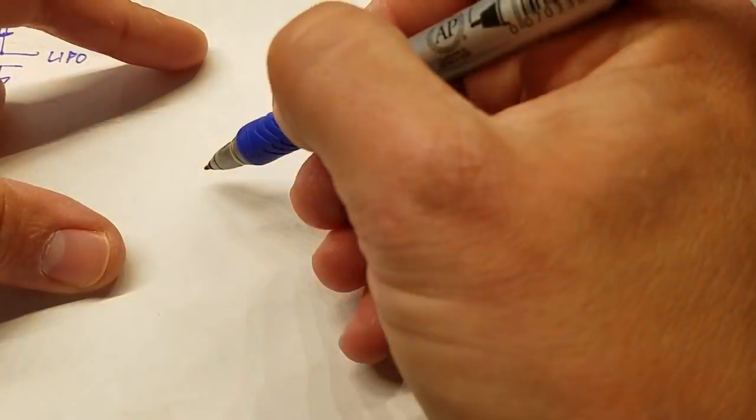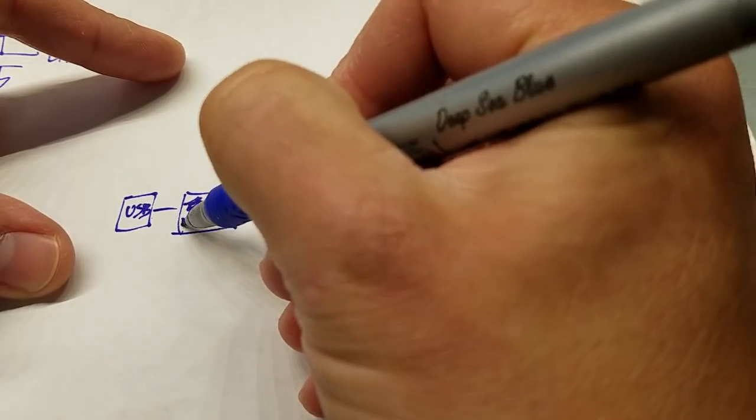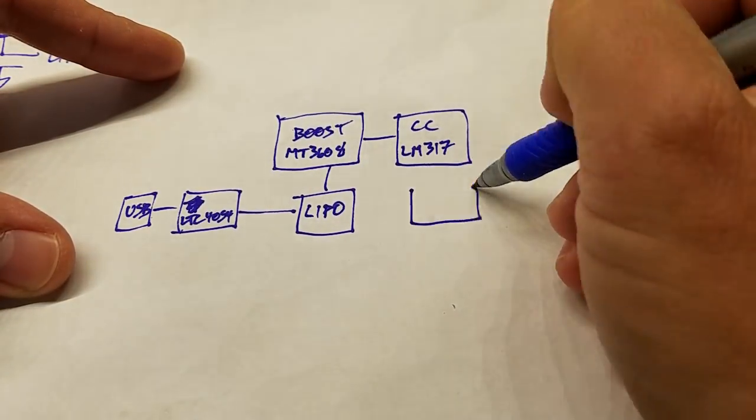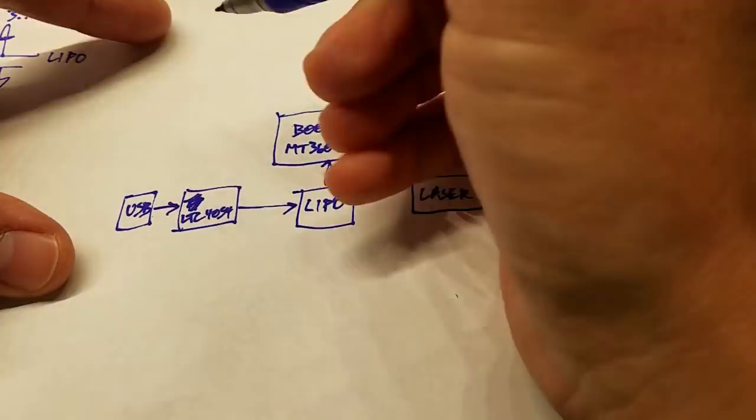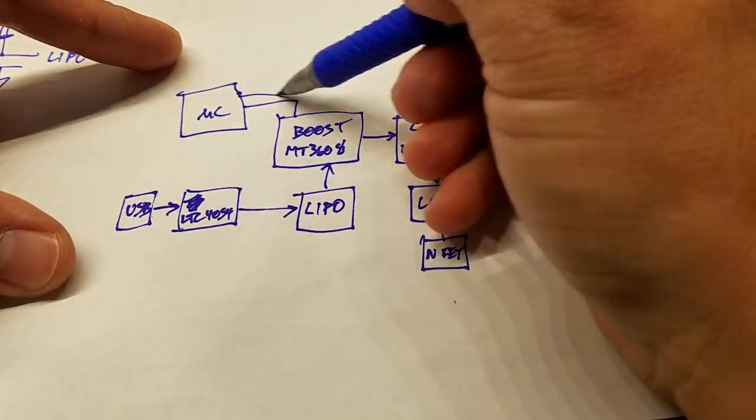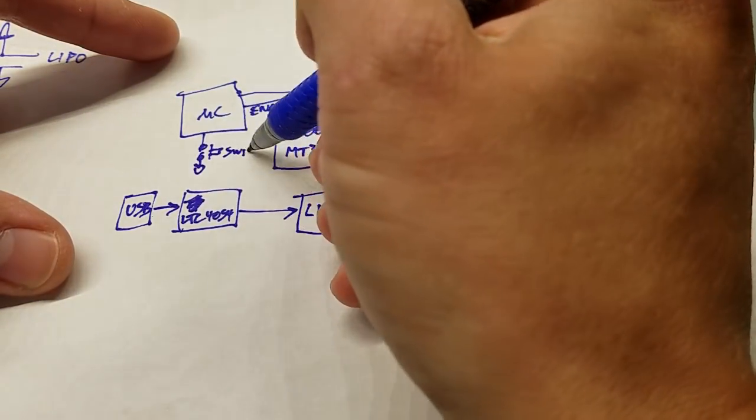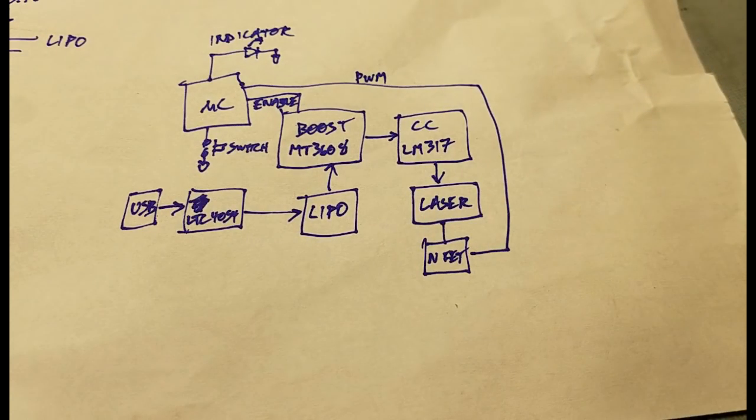The plan is to make a rechargeable laser with a LTC4054 lithium ion battery charger, LM317 constant current driver for the laser, and a boost converter to get the voltage the diode needs. I'll control it all with a microcontroller.